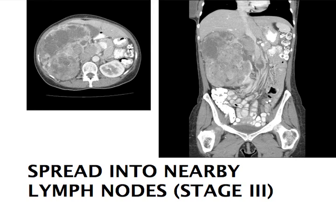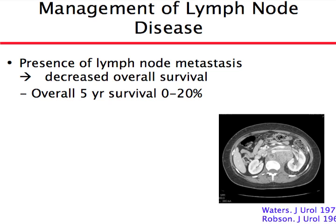The third topic is spread into lymph nodes. This CT scan shows a large tumor of the right kidney with extensive lymph node involvement. The patient underwent surgery with complete removal of the tumor and all lymph nodes. The proximity of the liver can make it appear as if there's invasion, but in this case there was none — just lymph nodes. However, spread to lymph nodes is a serious condition that decreases survival, with five-year survival ranging from 0% to 20% in this population.